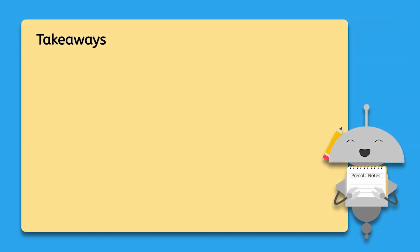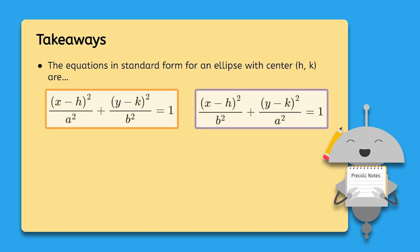Today, we learned how to write the equations in standard form for an ellipse with any center h, k. We saw how these equations resulted from simply translating the equations for an ellipse centered at the origin.